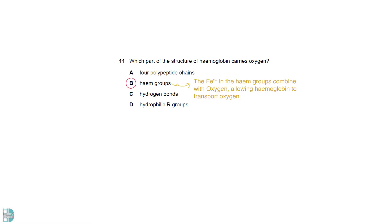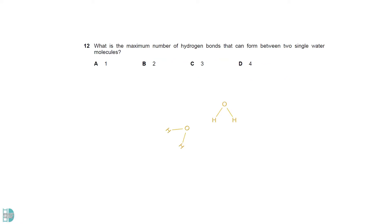The iron ions in the heme groups combine with oxygen, allowing hemoglobin to transport oxygen in our bodies. Two single water molecules can only form one hydrogen bond, between the slightly negative oxygen of one and the slightly positive hydrogen of another.